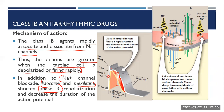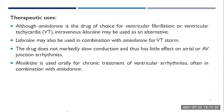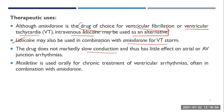Class 1b drugs reduce the time for repolarization of the cardiac muscle action potential and decrease the duration of the action potential, so the effective refractory period is reduced. Although amiodarone is the drug of choice for ventricular fibrillation and ventricular tachycardia, intravenous lidocaine may be used as an alternative and may also be used in combination with amiodarone for VT storm. The drug does not markedly slow conduction and thus has little effect on atrial or AV junction arrhythmias.